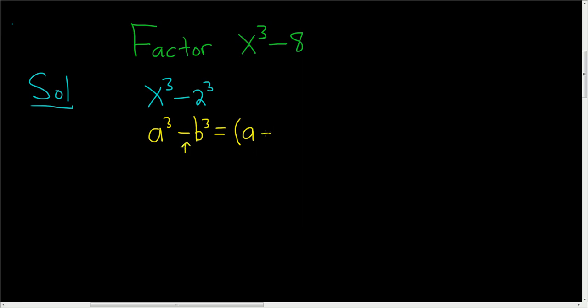So if you have a minus sign here, we write a minus sign here. If we had a plus sign here, we would write a plus sign here. Then here we have a squared, and then you switch the sign, so plus ab plus b squared.